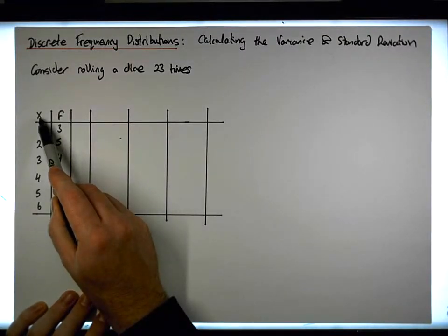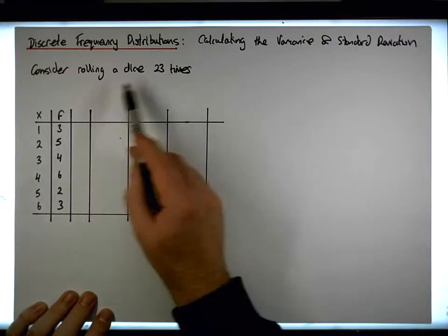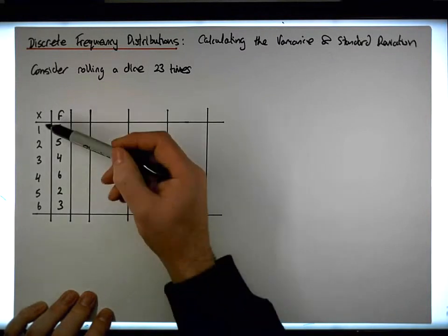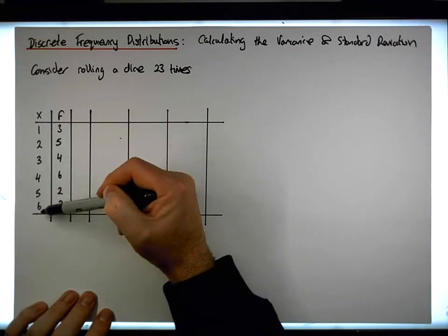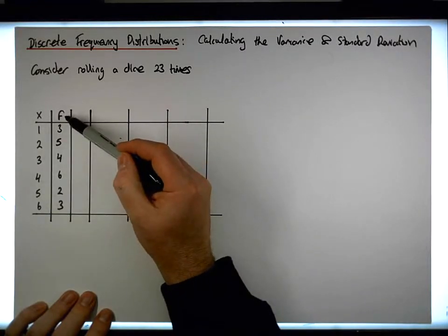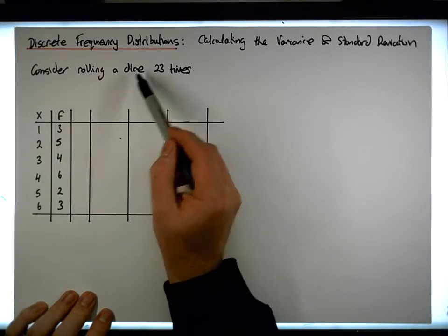The first column is a list of the outcomes that could possibly happen when we roll a particular dice. It's a six-sided die, so it has six faces, each face with a number on it, labeled 1, 2, 3, 4, 5, and 6. And the second column keeps track of the frequency, how many times these particular face values appeared when we rolled the die.